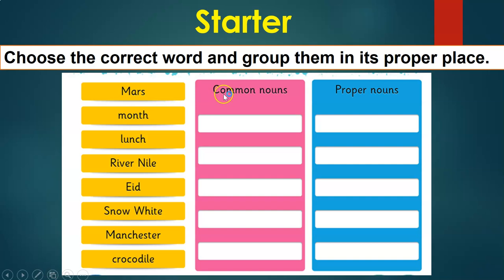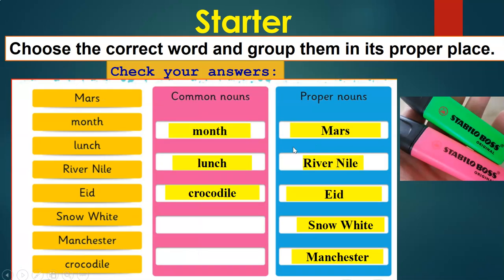Get your paper and a pencil and try to answer the activity. Pause the video now. Time is up — now let's reveal the answers. For common nouns we got: month, lunch, and crocodile. For proper nouns we got: Mars, River Nile, Ead, Snow White, and Manchester.